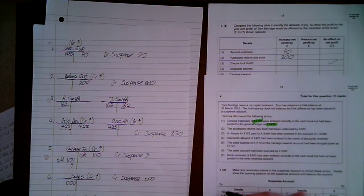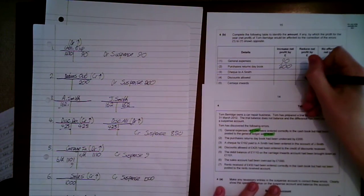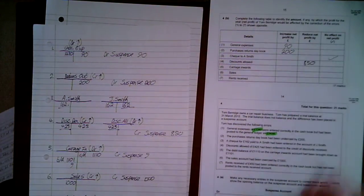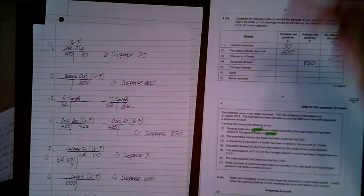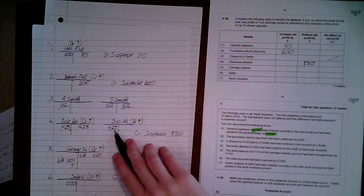Point 4 — discount allowed: discount allowed £425 was entered to the credit of discount received. In the mistake we thought we received £425 which is an income, but what we actually did was allow £425, which is an expense. So we've gone from gaining £425 to losing £425 — the difference is £850. So we're going to decrease our profit by £850, adding the two figures of 425 plus 425.